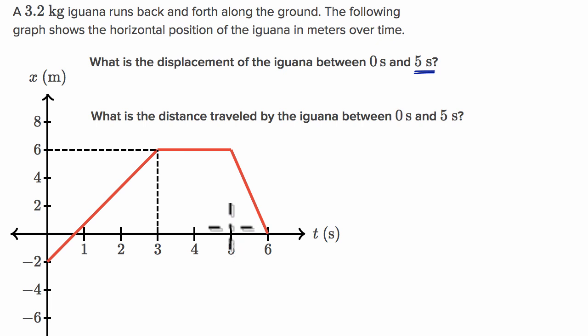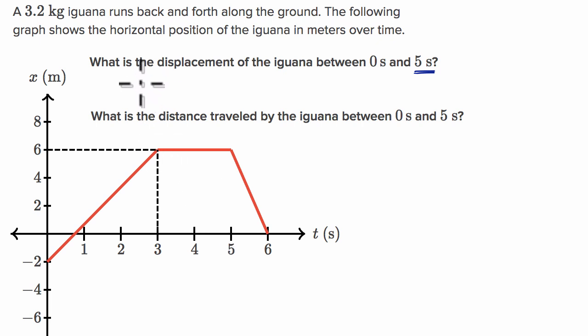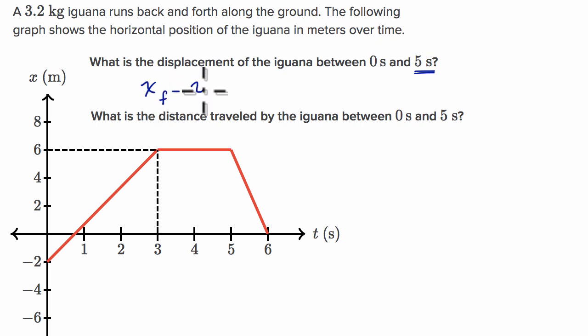Displacement is just your change in position, and sign matters — we care about direction. So it's going to be your final position minus your initial position.